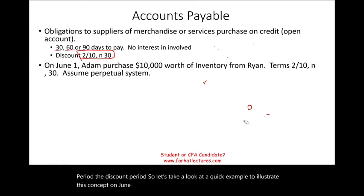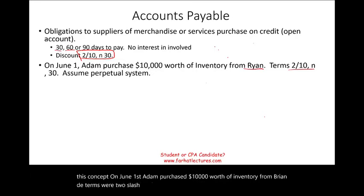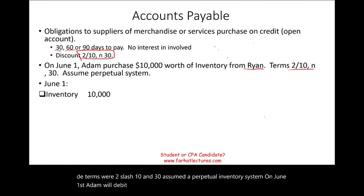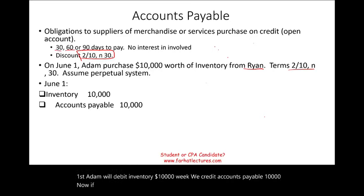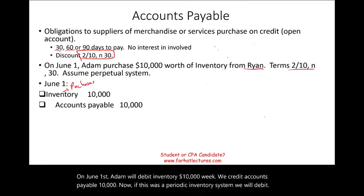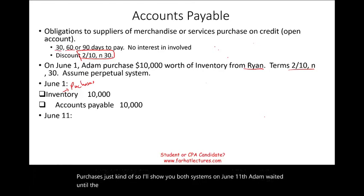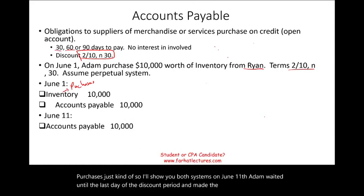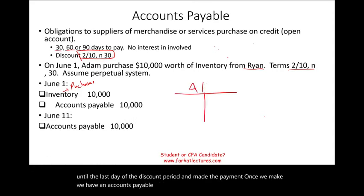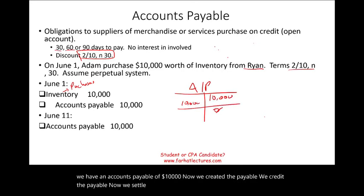On June 1st, Adam purchased $10,000 worth of inventory from Ryan on terms of 2/10 net 30, using a perpetual inventory system. Adam debits inventory $10,000 and credits accounts payable $10,000. (Under a periodic system, you would debit purchases instead.) On June 11th — the last day of the discount period — Adam makes the payment. The accounts payable of $10,000 is now settled.